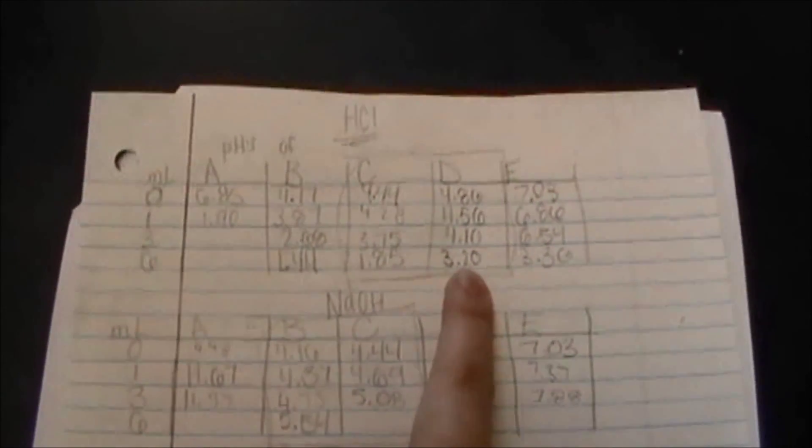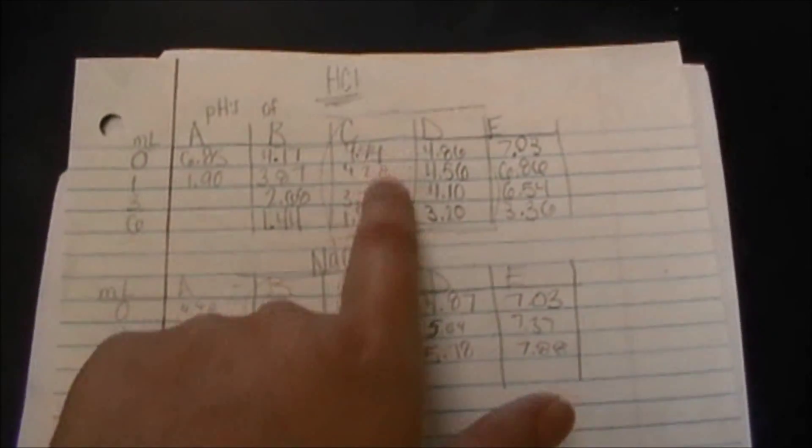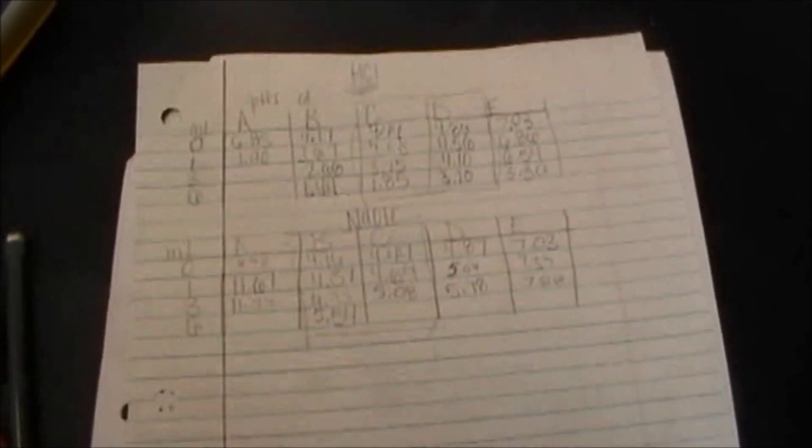And looking at our data tables, the consistent one for acid was C and D to be the best buffer to get a ratio of one. And then for NaOH, it's looking like it's going to be B and C. And so that makes C the consistent buffer solution for both acid and base. So that'll probably be the one that we're going to use for the next part of our lab.